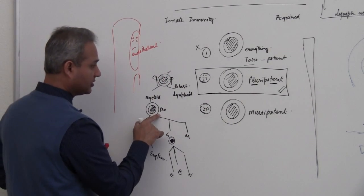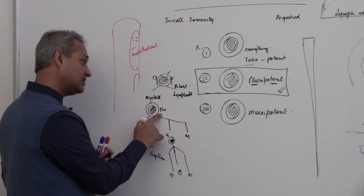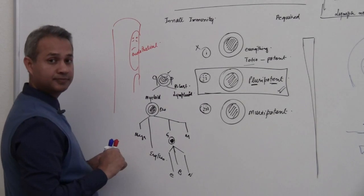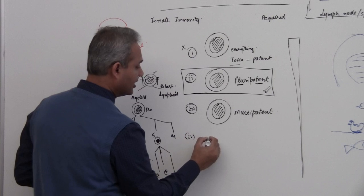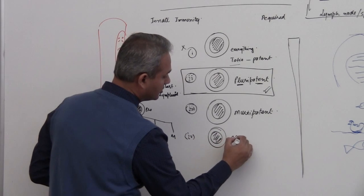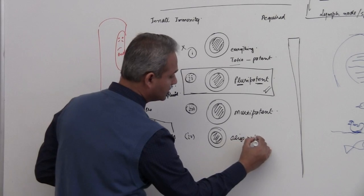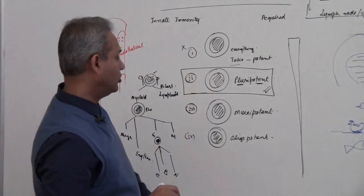Then this guy is multipotent. He can make blood cells but not all of them. And then we have oligopotent. See, I am making them all the same.